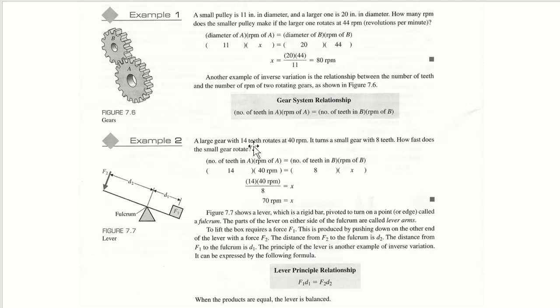So in example number one, we have a small pulley or gear, it looks like, is 11 inch diameter. The large one is 20 inches in diameter. How many RPM does a small pulley make? Or how many revolutions per minute does the small pulley make?